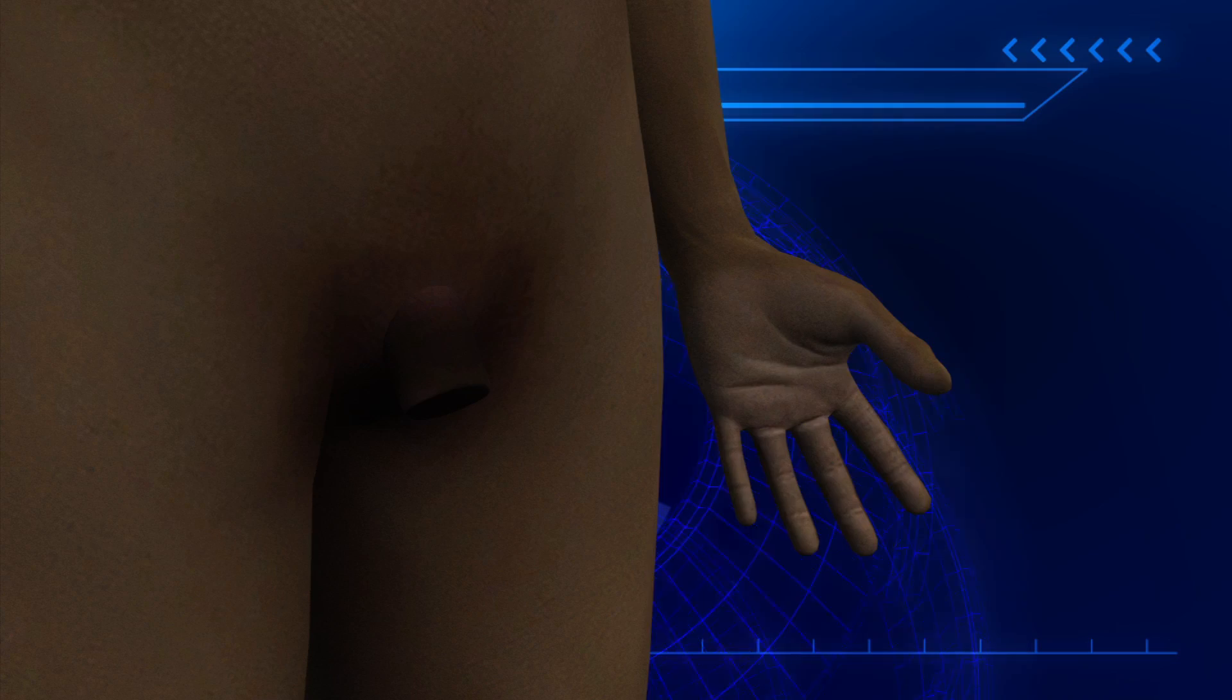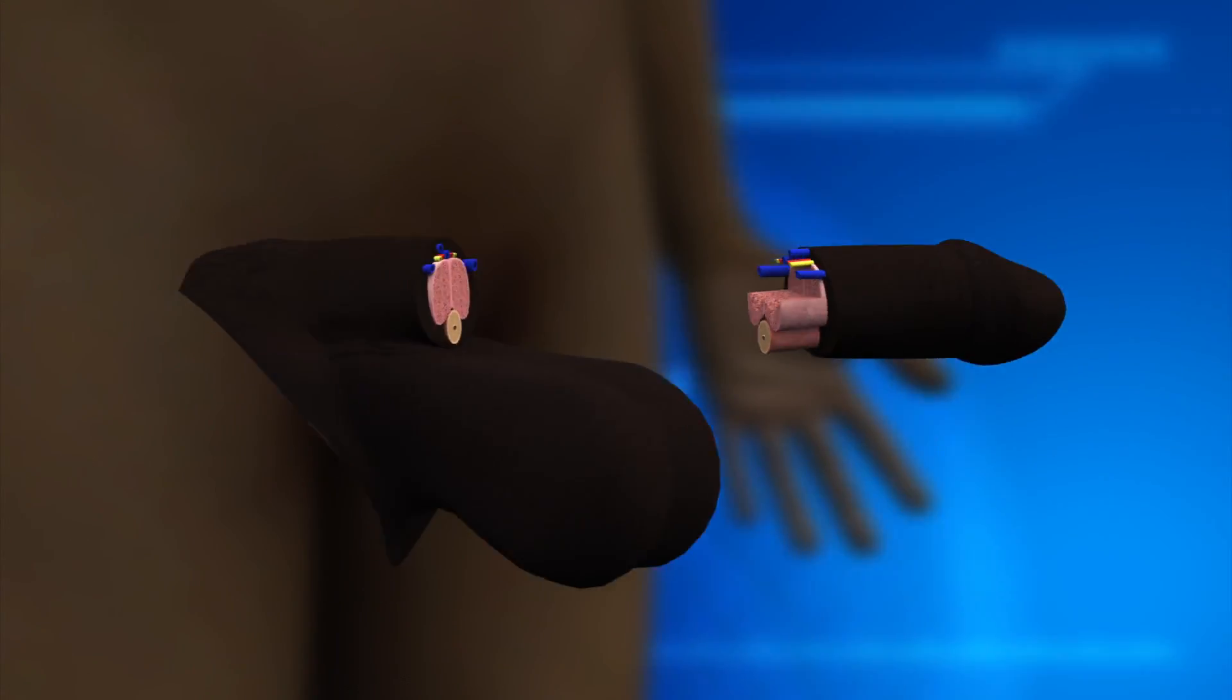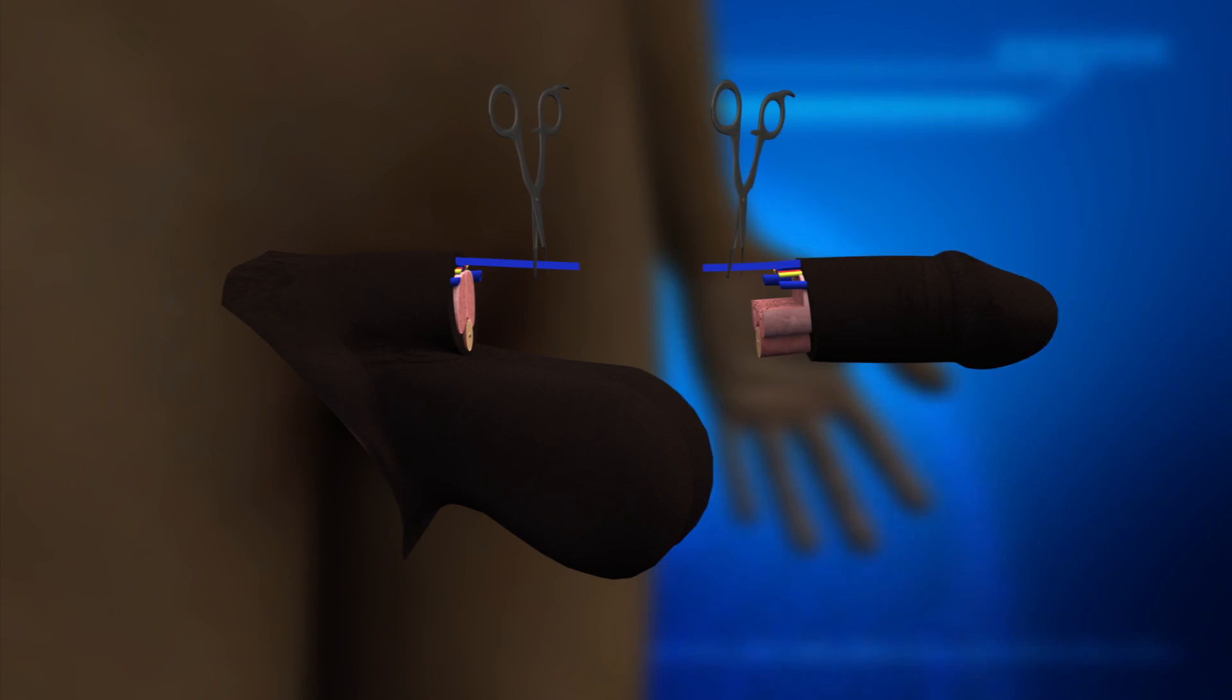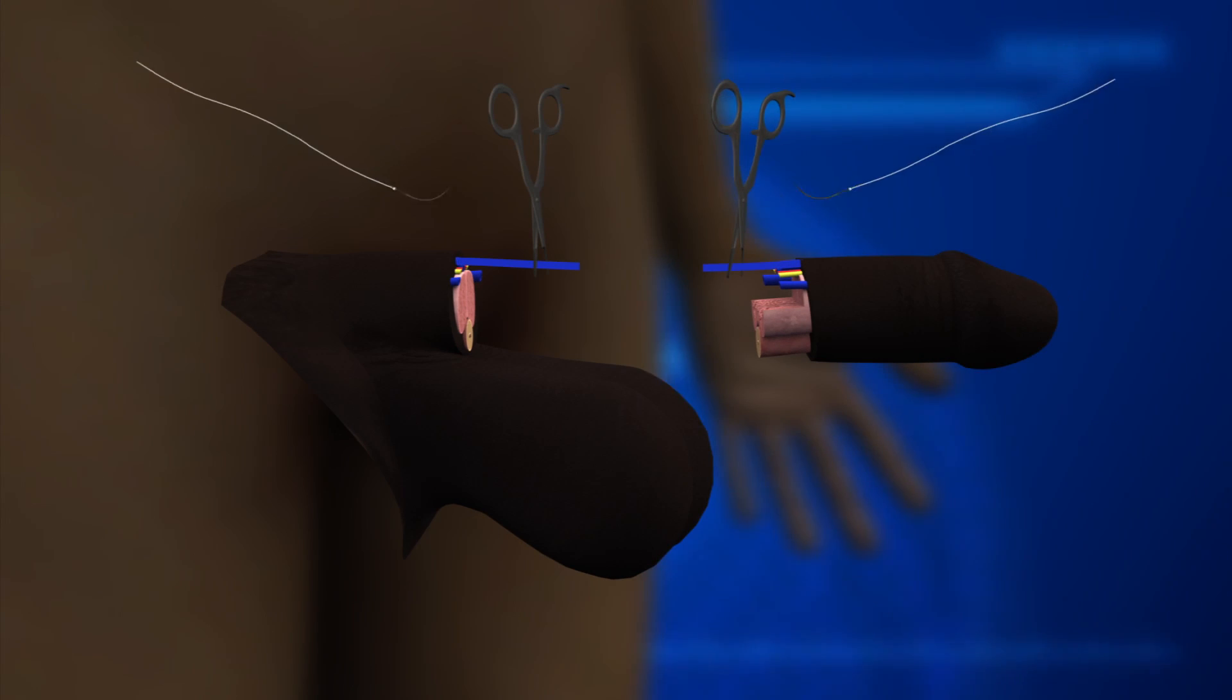During the procedure, surgeons isolated the blood vessels and secured them with a clamp. They then stitched the blood vessels together using sutures and five to eight stitches.